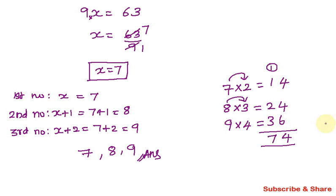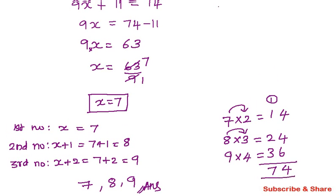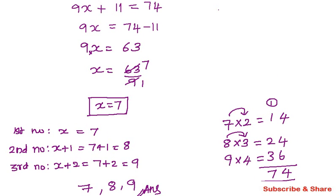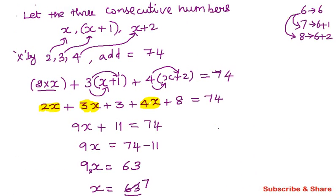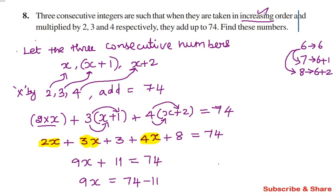So the three consecutive integers taken in increasing order, multiplied by 2, 3, and 4 respectively, add up to 74. The numbers are 7, 8, and 9.